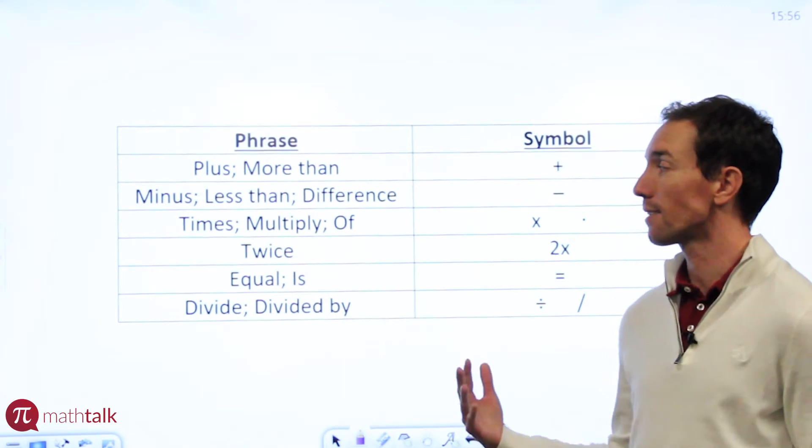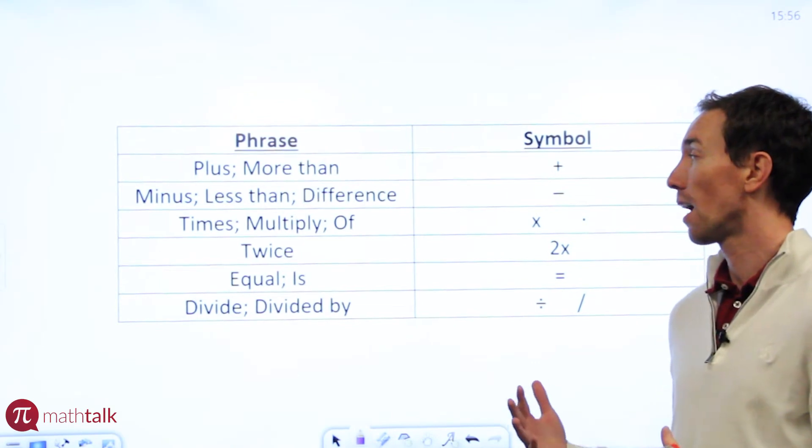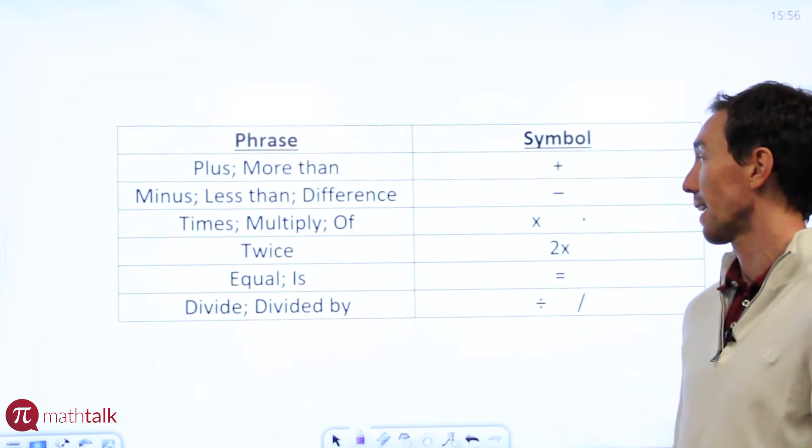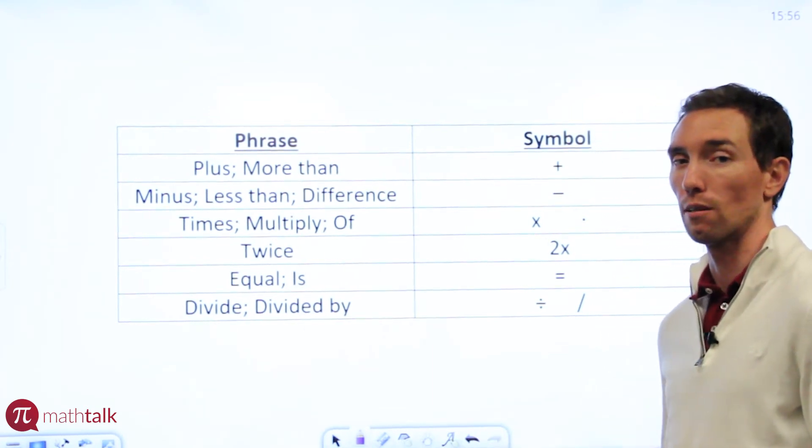If you see something like 'times,' 'multiply,' or even the word 'of' in math, that all means multiply. It means use your multiplication symbol which is like an X or a dot or even some other ways which we'll get into in a little bit.